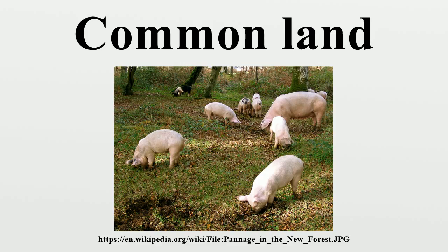Most of the medieval common land of England was lost due to enclosure. In English social and economic history, enclosure is the process which ends traditional rights such as mowing meadows for hay, or grazing livestock on common land formerly held in the open field system. Once enclosed, these uses of land become restricted to the owner, and it ceases to be land for the use of commoners. In England and Wales the term is also used for the process that ended the ancient system of arable farming in open fields. Under enclosure, such land is fenced and deeded or entitled to one or more owners. The process of enclosure began to be a widespread feature of the English agricultural landscape during the 16th century.